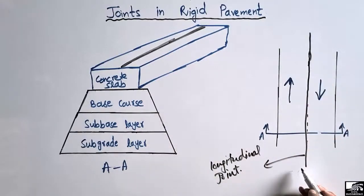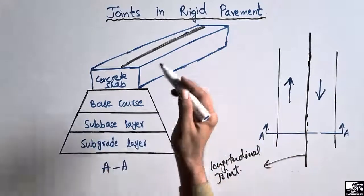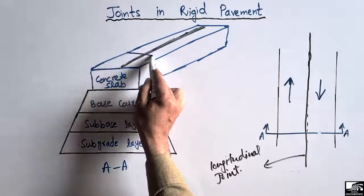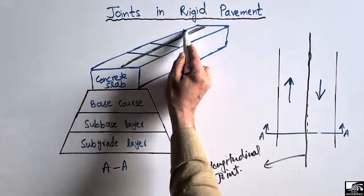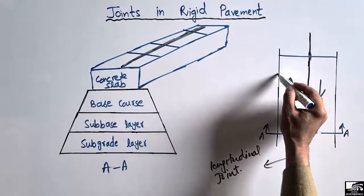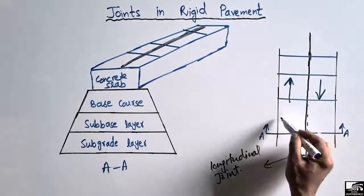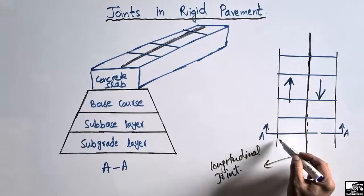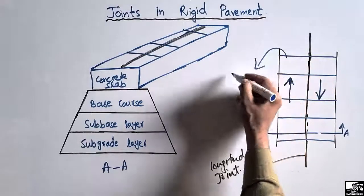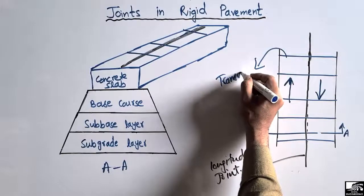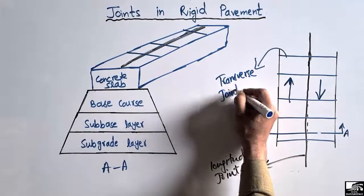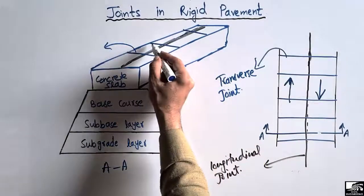The other type of joint is provided in the perpendicular direction to that of the longitudinal joint, and this joint is known as the transverse joint. It is provided transversely to the longitudinal joint, that's why it's called the transverse joint.